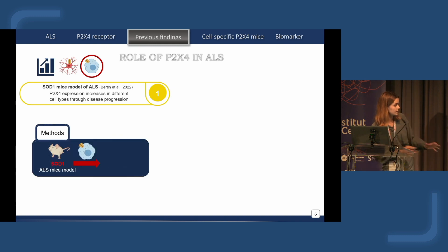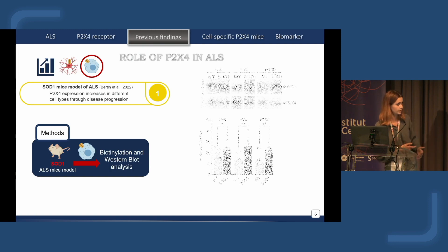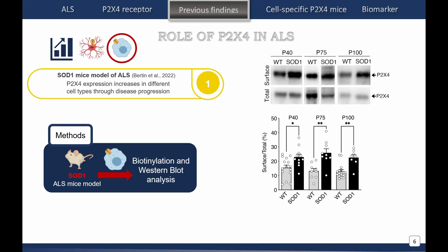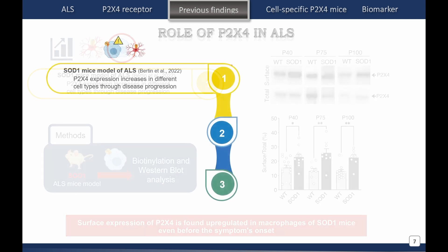We took macrophages from SOD1 mice and studied surface expression changes by biotinylation. We took different stages of the disease: presymptomatic at P75 and symptomatic state at P100. We found that even before symptom onset, P2X4 surface expression was already upregulated.